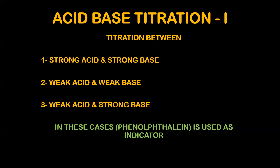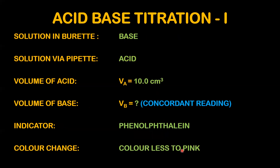In the case of a weak acid and weak base titration, we can use methyl orange as the indicator instead. So depending on whether you have strong acid-strong base, or weak acid-strong base, you choose the appropriate indicator.